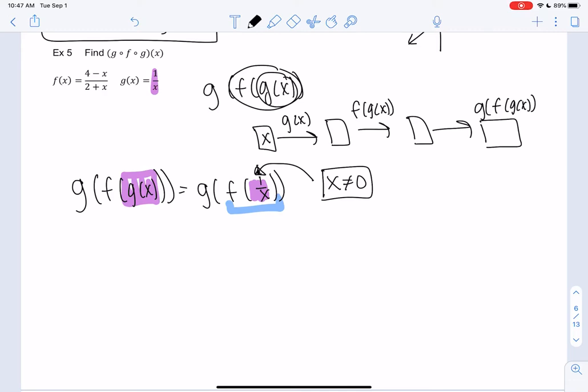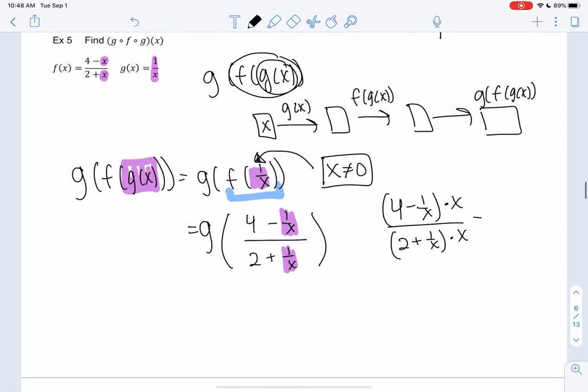So let's plug 1 over x into f. We actually did this one above, but we're going to do it again. So we're going to replace x. So don't touch g. Just have it hang out for a little bit. You could even do this on the side if you wanted to. So we actually just did this above, right? Remember, we multiplied top and bottom by x. We can multiply by LCD to kind of get rid of the fraction in a fraction. And we get 4x minus 1 over 2x plus 1.